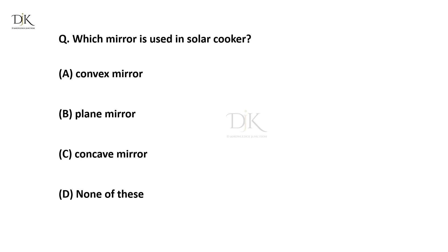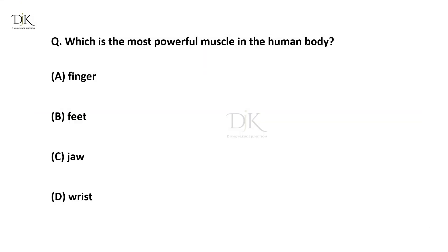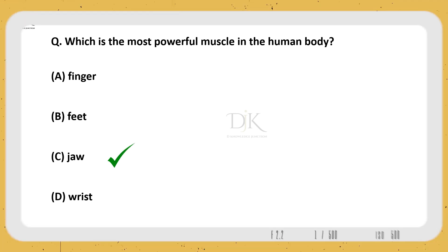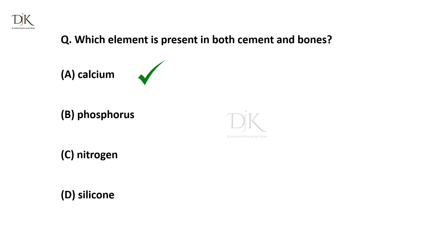Which mirror is used in a solar cooker? The right answer is Concave mirror. Which is the most powerful muscle in the human body? The right answer is Jaw. Which element is present in both cement and bones? The right answer is Calcium.